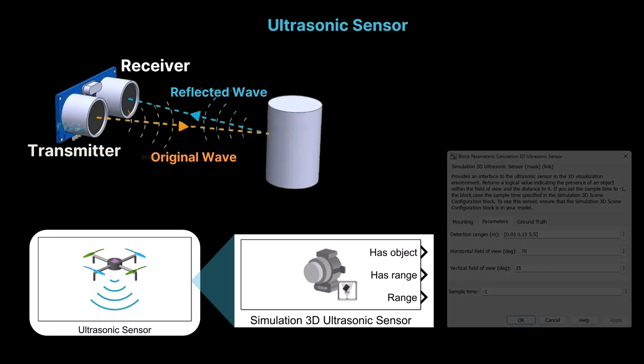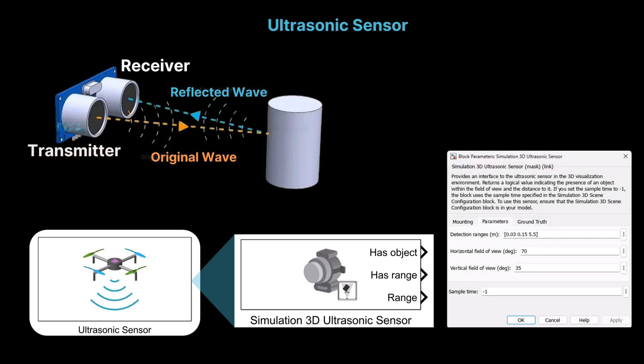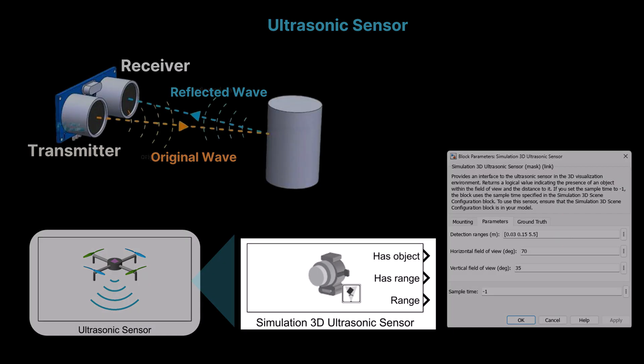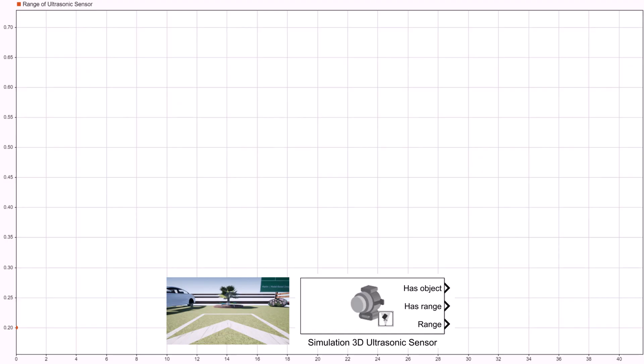In Simulink, the ultrasonic sensor model simulates the behavior of a real-world ultrasonic sensor by calculating the distance between the sensor and nearby objects using ray-casting techniques in a three-dimensional environment. It mimics how an actual sensor emits ultrasonic pulses and detects reflections to estimate range. Here are the simulation results from the ultrasonic sensor model, which is oriented downward on the drone.